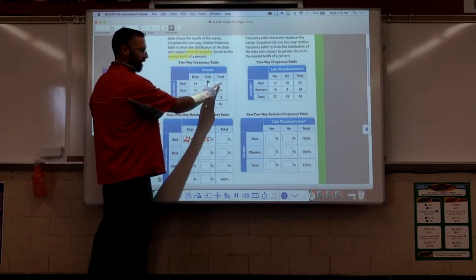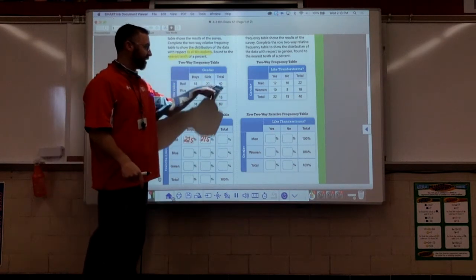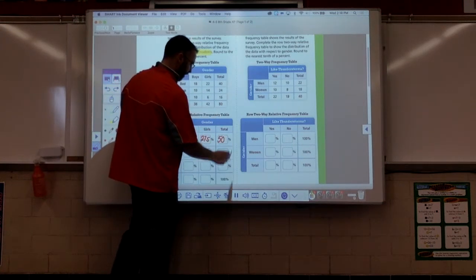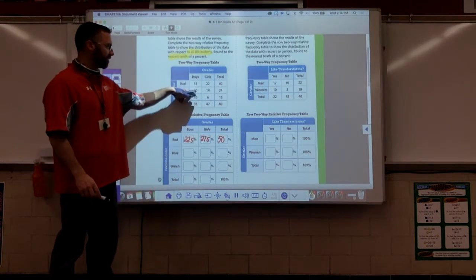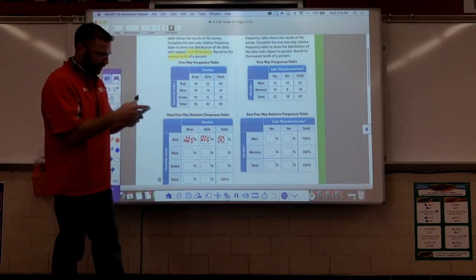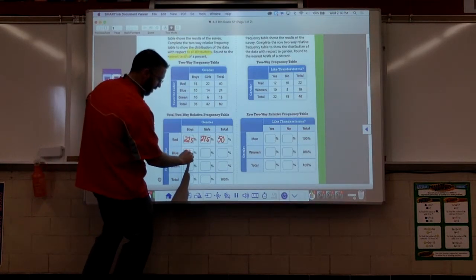My total kids who like red is 40 out of 80. Now I can do that one in my head. 40 divided by 80, this is half folks, and half, if you've got half, you've got 50%. Going down to blue, 10 kids out of 80. 10 divided by 80 times 100, this comes out to be 12 and a half.